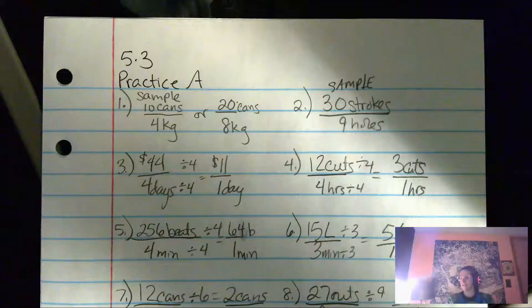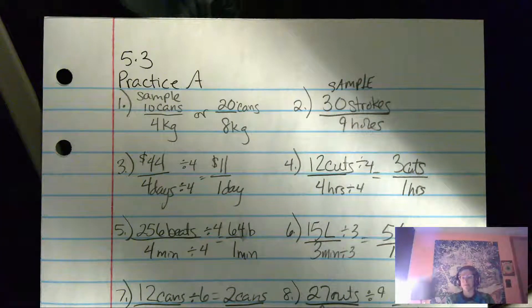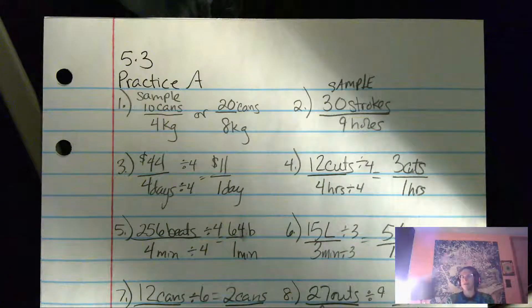Three through 10 is looking at unit rates. You're finding out how much per. Number three, they make $11 per day or it costs $11 per day. I don't know what the setup was, but it was $11 a day. Number four is three cuts an hour.